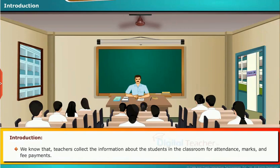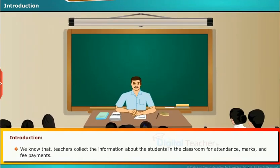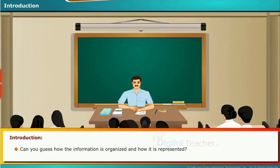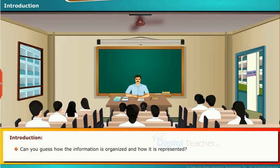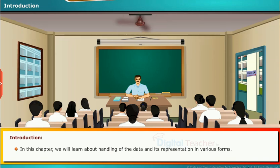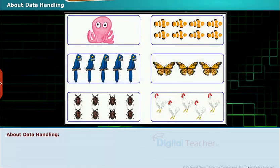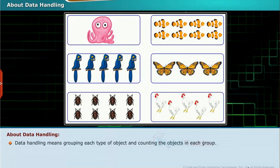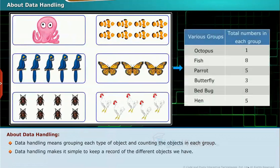We know that teachers collect information about students in the classroom for attendance, marks, and fee payments. Can you guess how the information is organized and how it is represented? In this chapter, we will learn about handling of data and its representation in various forms. Data handling means grouping each type of object and counting the objects in each group, making it simple to keep a record of the different objects we have.